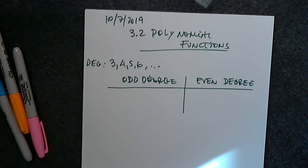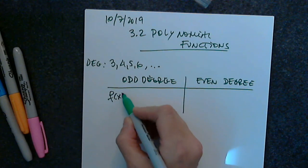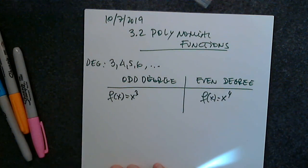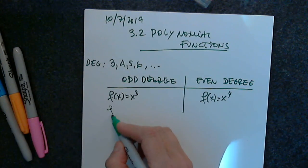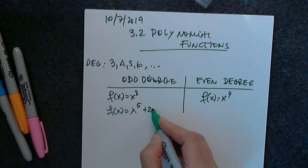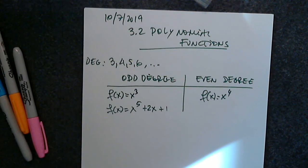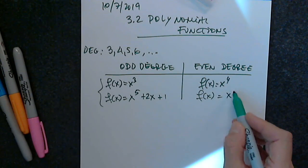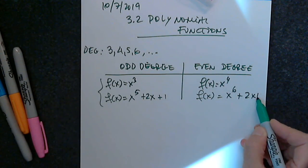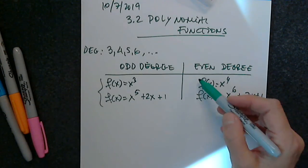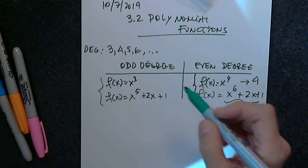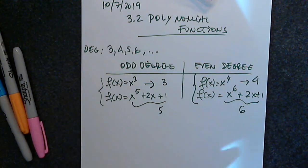We're talking about functions like x cubed, x to the fourth, or f of x equals x to the fifth plus 2x plus 1 — these all have odd degree. And here x to the sixth plus 2x plus 1 — these are even degree. This one has degree 4, this one degree 6, this one degree 3, and this one degree 5.